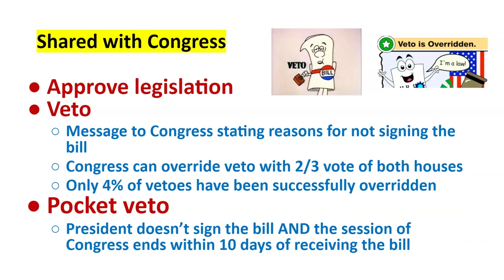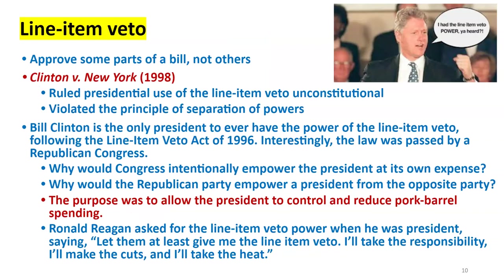The president has liaison staff to help draft and shepherd legislation through Congress. In terms of actual official lawmaking, the president doesn't make law. The line item veto is as close as we've come to giving the president that type of power — but the Supreme Court ruled it unconstitutional.